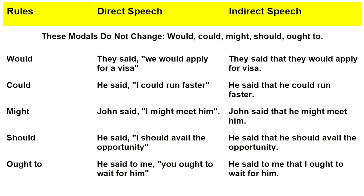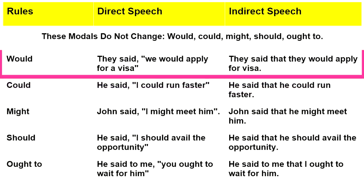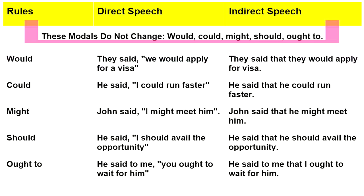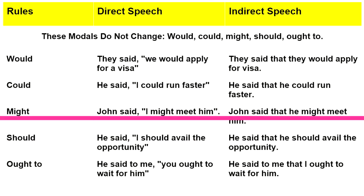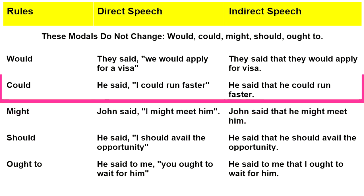Some modals do not change: would, could, might, should, and ought to. For example, with 'would': he said he would apply for a visa. In indirect speech: they said that they would apply for a visa. With 'could': he said, 'I could run faster.' In indirect speech: he said that he could run faster.